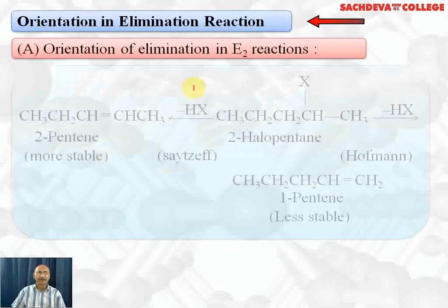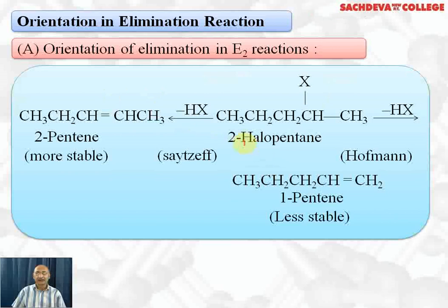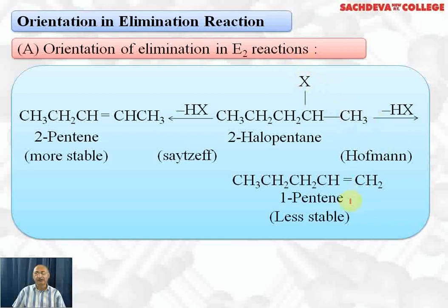Orientation in the elimination reaction: if you have 2-halopentane, there are two possibilities. One is that X is removed from C2 and H is removed from C3, giving 2-pentene. Since 2-pentene is more stable (more alkyl-substituted), it is the major product — this is called Zaitsev elimination. The other possibility, Hofmann elimination, involves removing X and H to give 1-pentene, which is less stable.